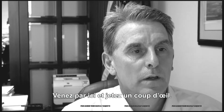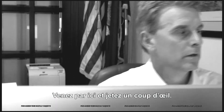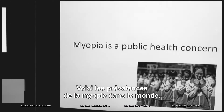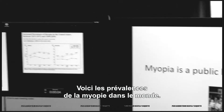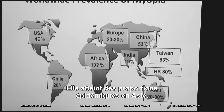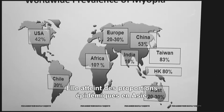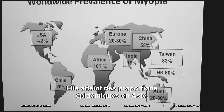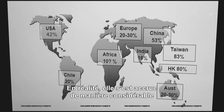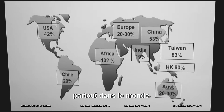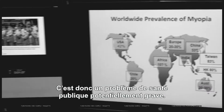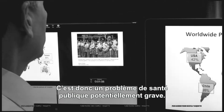Come over here and take a look at this screen. These are worldwide prevalences of myopia. It's reached epidemic proportions in Asia, but it's truly gone up significantly throughout the world. That's a serious potential public health problem.